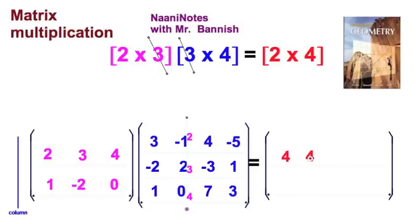Negative 2. Plus 6 plus 0. Do you see it? So, again, I end up with 4. And that is the first row times the second column. So, it goes in the 1, 2 position. See, and if you miss this, you'll have to get it on Nani notes.